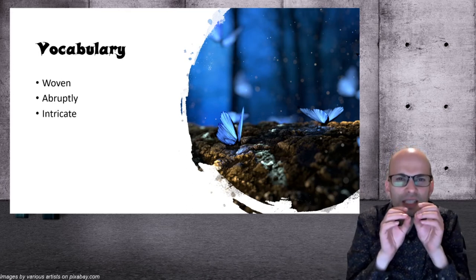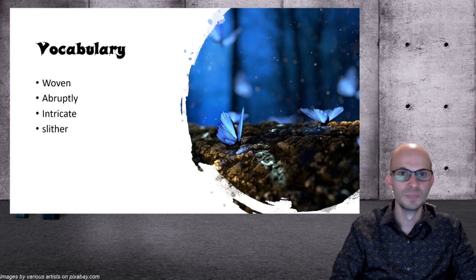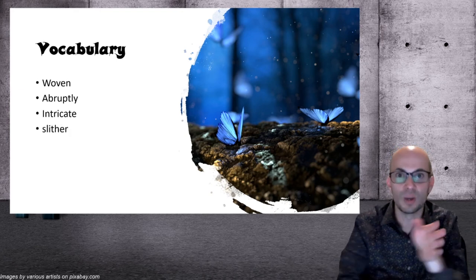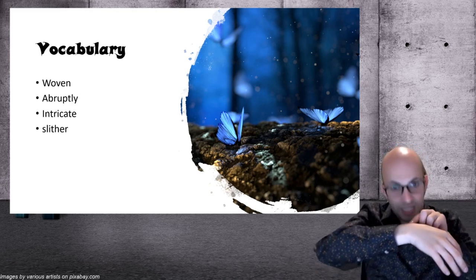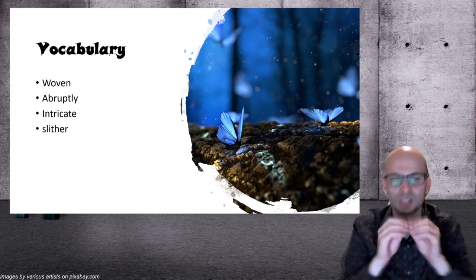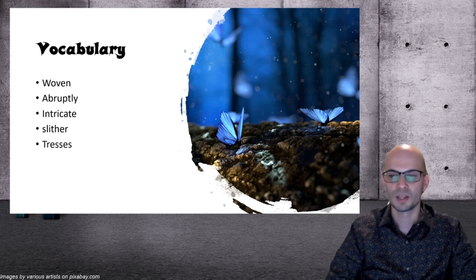Intricate means detailed, small. Slithered is like a snake, the way a snake moves. We call it slither. The dwarves' bracelet looked so intricate, the detail was so good that it looked like the snakes were actually moving.